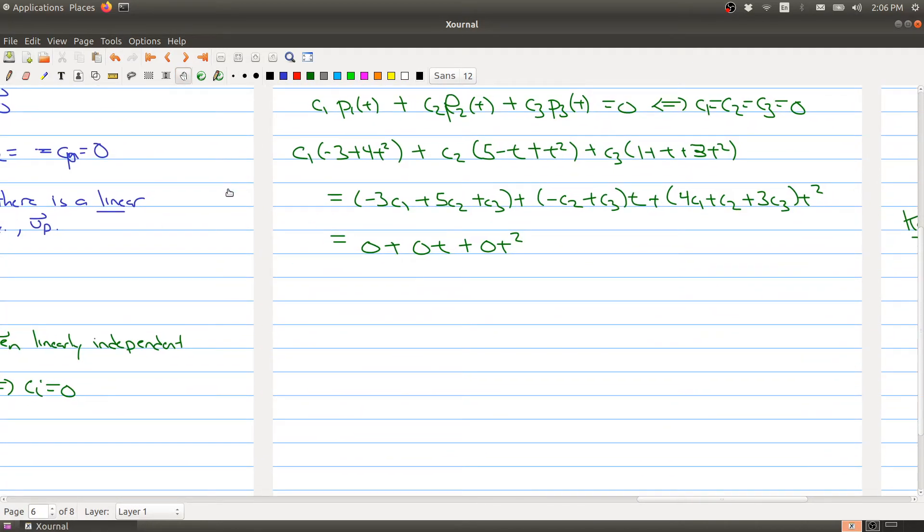So what we're actually getting here is a system of linear equations because we want this guy to be equal to 0, we want this guy to be equal to 0, and we want this guy to be equal to 0. So we actually have a system of linear equations. So we have minus 3, 5, 0, 0, 0, minus 1, 1, 4, 1, 3 times C_1, C_2, C_3 equaling 0, 0, 0. So solving the system of linear equations gives us all the ways that we can solve this equation at the beginning, setting it equal to 0. And so what we want to know is, do we have a trivial solution or do we have a non-trivial solution? Now if you want to notice something here, is that we've actually turned our original problem into a system of linear equations, and then we want to try to answer the question.